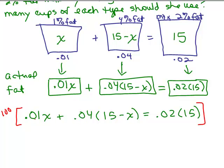So when I do 100 times .01, that just now becomes 1x or x. You could write 1x or you could write x. When I multiply it by the next term, remember, this is the whole term, .04 times 15 minus x. Well, when you multiply three things together, you just first multiply two things together. So the 100 times .04 is just 4 and then I still have to multiply by 15 minus x.